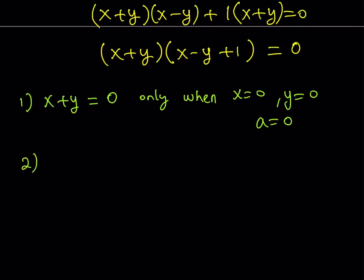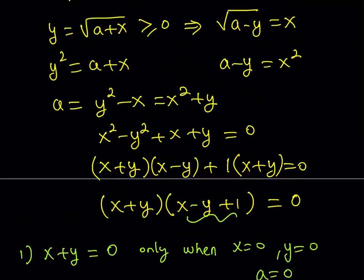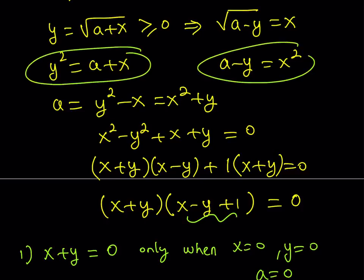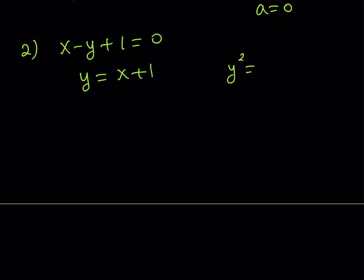The second branch comes from setting x minus y plus 1 equal to 0, which means that y is equal to x plus 1. What does that mean? Well, if you go back to one of the original equations — we had y squared is equal to a plus x. So if you go ahead and replace y with x plus 1 here, then you should be getting x plus 1 squared is equal to x plus a. So this basically gives you a quadratic equation.